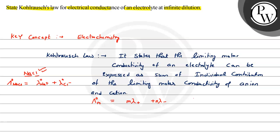For example, if we have MgCl₂, the molar conductivity will be expressed differently. MgCl₂ dissociates into Mg²⁺ and 2Cl⁻, so the limiting molar conductivity of MgCl₂ equals the limiting molar conductivity of Mg²⁺ plus 2 times the limiting molar conductivity of Cl⁻. The coefficient 2 comes from the stoichiometry. This is all about Kohlrausch's law for electrical conductance of an electrolyte at infinite dilution.